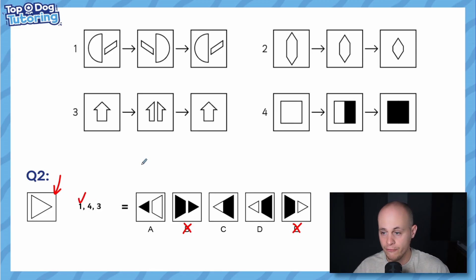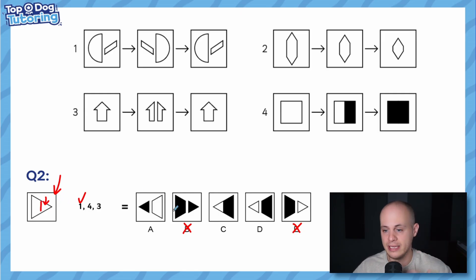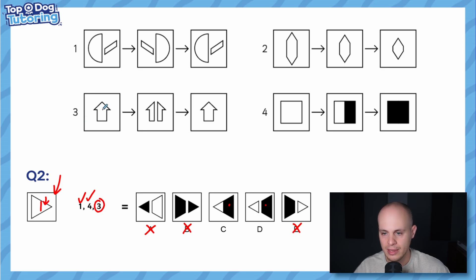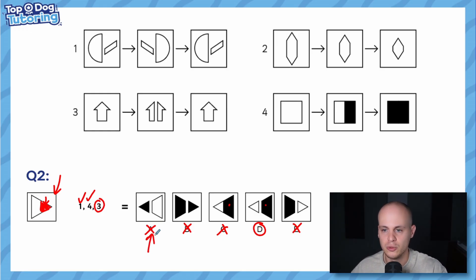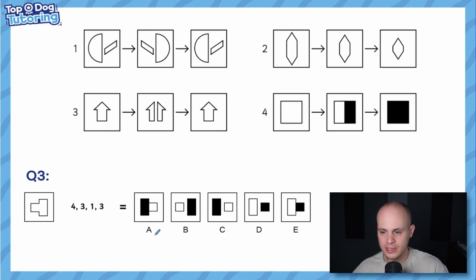Operation four shades the right-hand half black — but we already flipped the shape with operation one, so 'right-hand side' now refers to the larger side of the flipped shape. We're looking at C or D; eliminate A. Operation three splits the shape in half vertically, so the answer is D. This shows the importance of doing operations in order — doing four before one would give the wrong answer A.